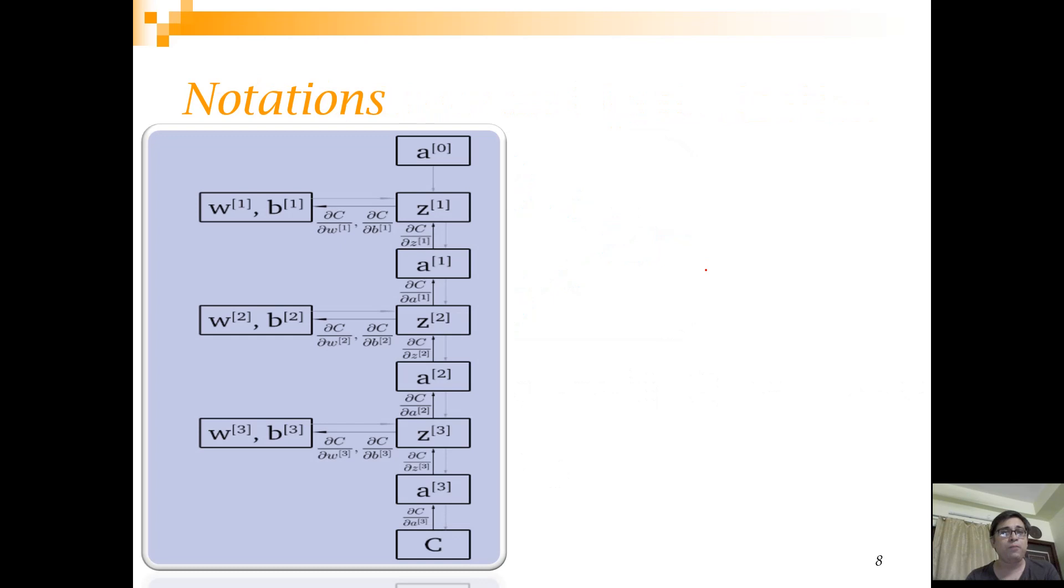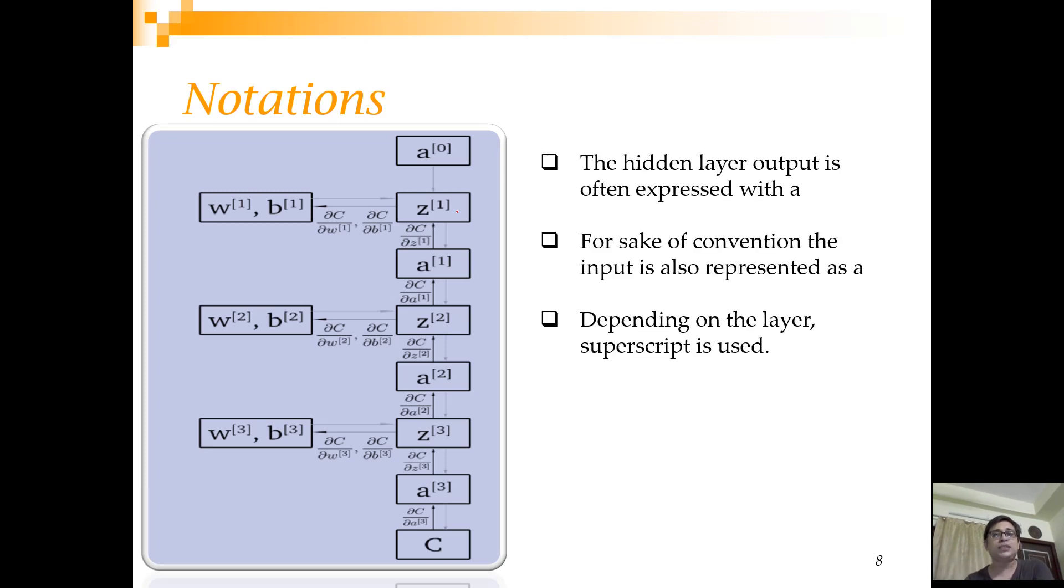Let's look at three layers now and some notations. Basically, each layer is superscripted with the layer number. Here you are calling it z1, here z2, and these are now vectors, not individual values. z1, the activation function is applied, a1 is produced. a1 acts as an input and z2 is produced, activation function is applied, a2 is produced. That's how z3 and a3 come and finally you get the error from your cost function C.